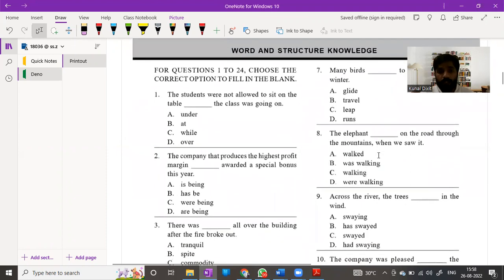Let's quickly go to question 1 to 24. We look at question number 2 here and we will try to see how we are supposed to solve this kind of question. The company that produces the highest profit margin dash awarded a special bonus this year.